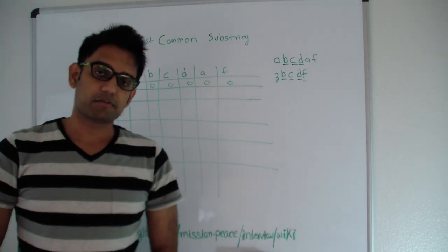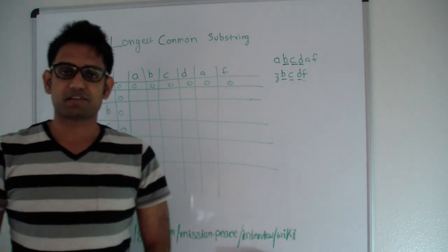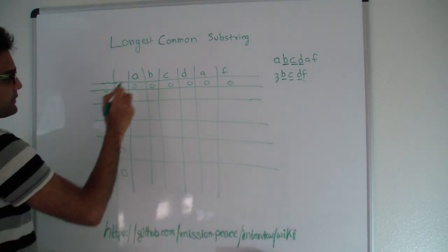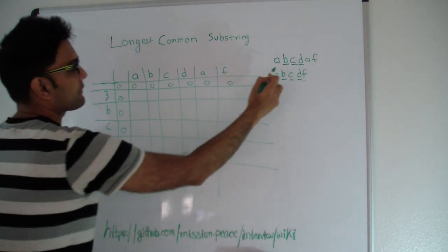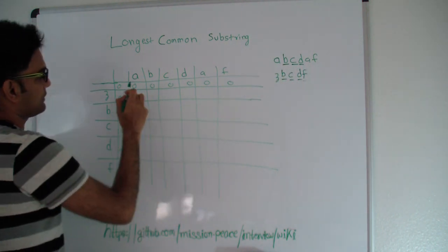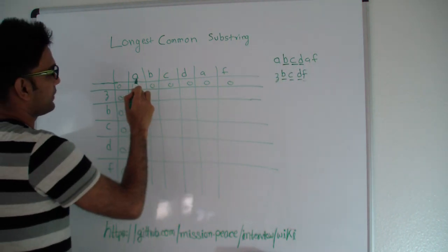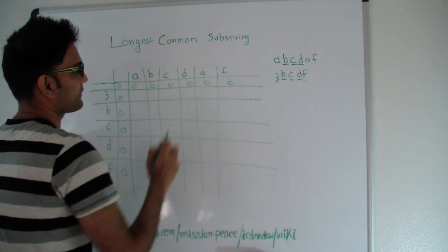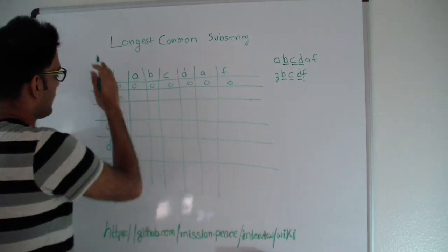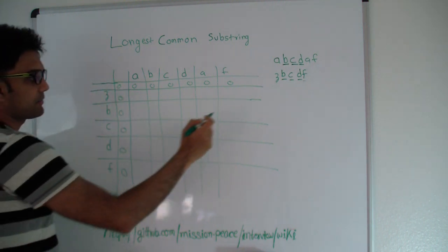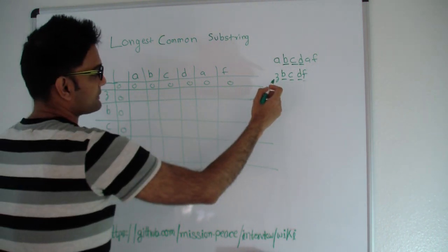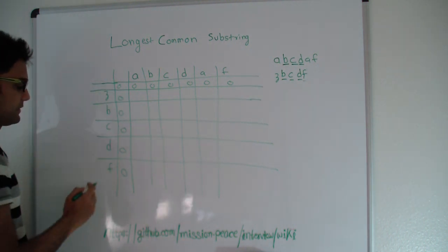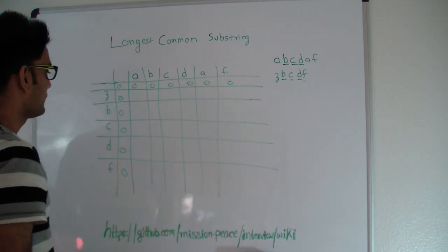How do we solve this problem? Using dynamic programming. On the first row I have the first string: A, B, C, D, A, F. And in the first column I have the second string: Z, B, C, D, F. We'll populate this matrix and get the result from there.